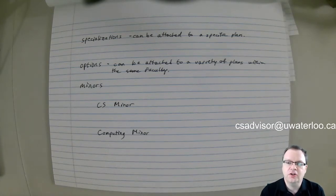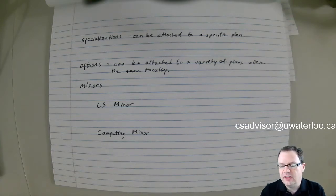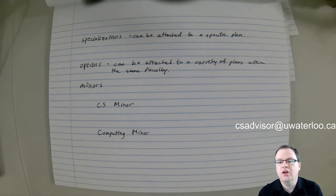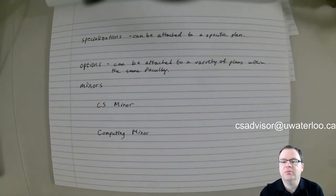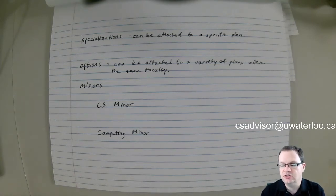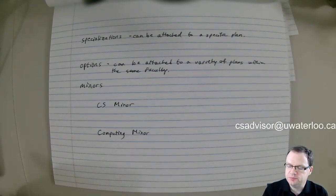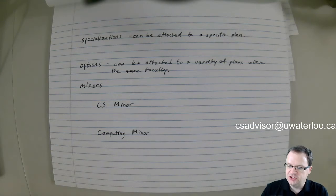If you're interested in an example of something that is an option, you can look at the AI specialization, which is also available to engineering students. On the engineering side it is an option because it can be attached to a variety of engineering degrees, not just one, whereas the AI specialization on the CS side can only be attached to computer science. So that's specialization and option.